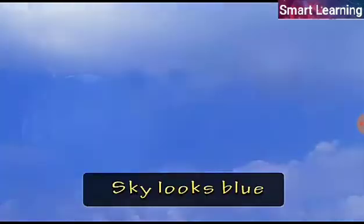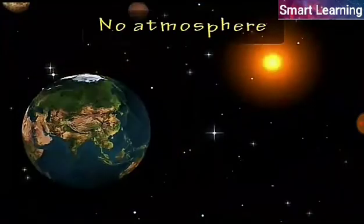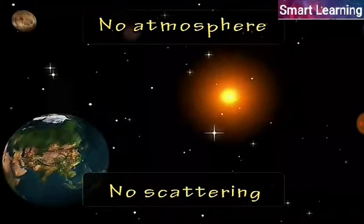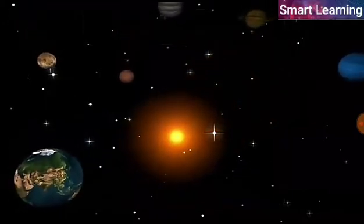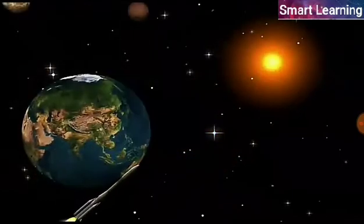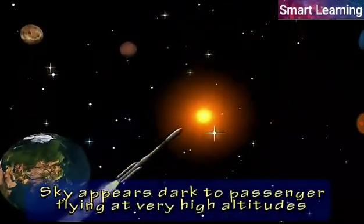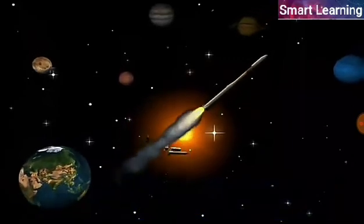If the earth had no atmosphere, no color of sunlight would be scattered and the sky would have looked dark during the daytime as it does at night. It is very interesting to note that the sky appears dark to passengers flying at very high altitudes as at such heights the scattering is not prominent.